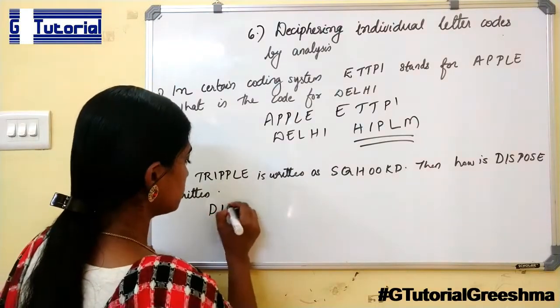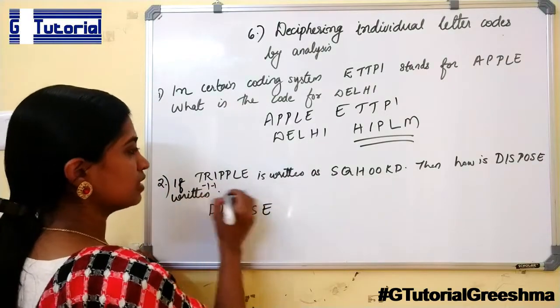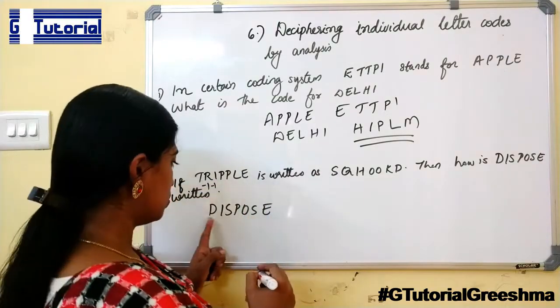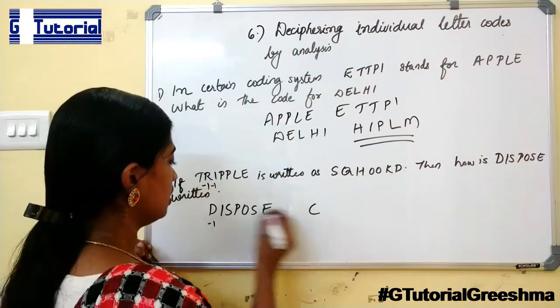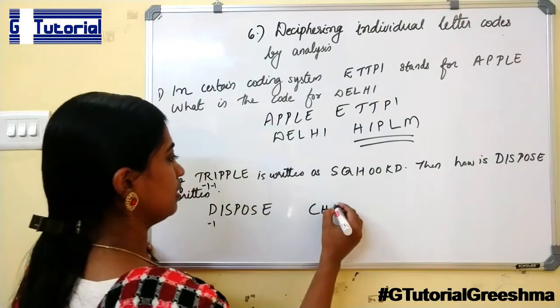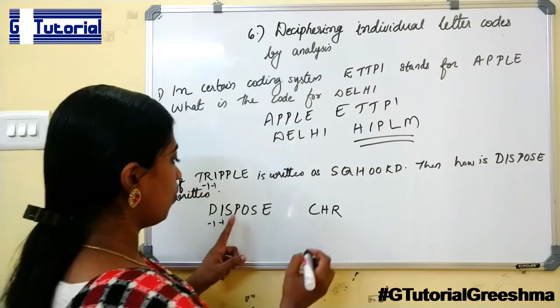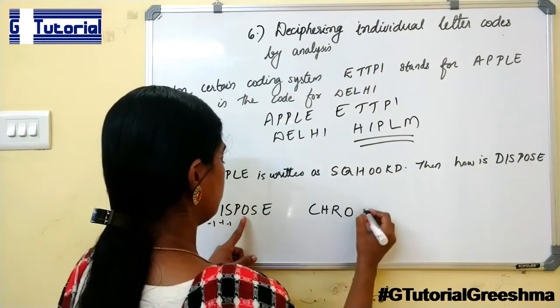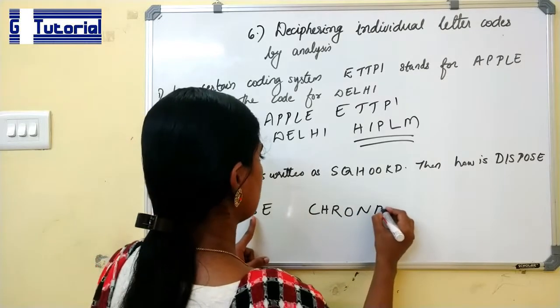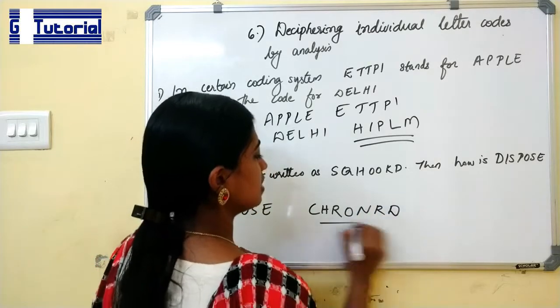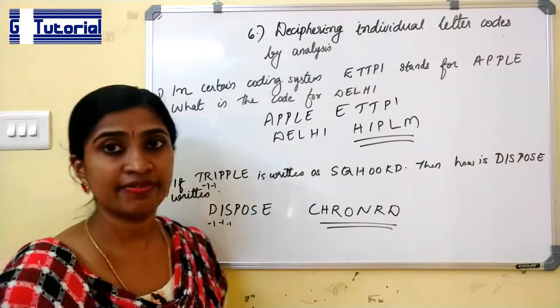So dispose will be D minus 1 is C, I minus 1 is H, S minus 1 is R, P minus 1 is O, O minus 1 is N, S minus 1 is R, E minus 1 is D. This is the code. Now we can move on to the next type, the seventh type.